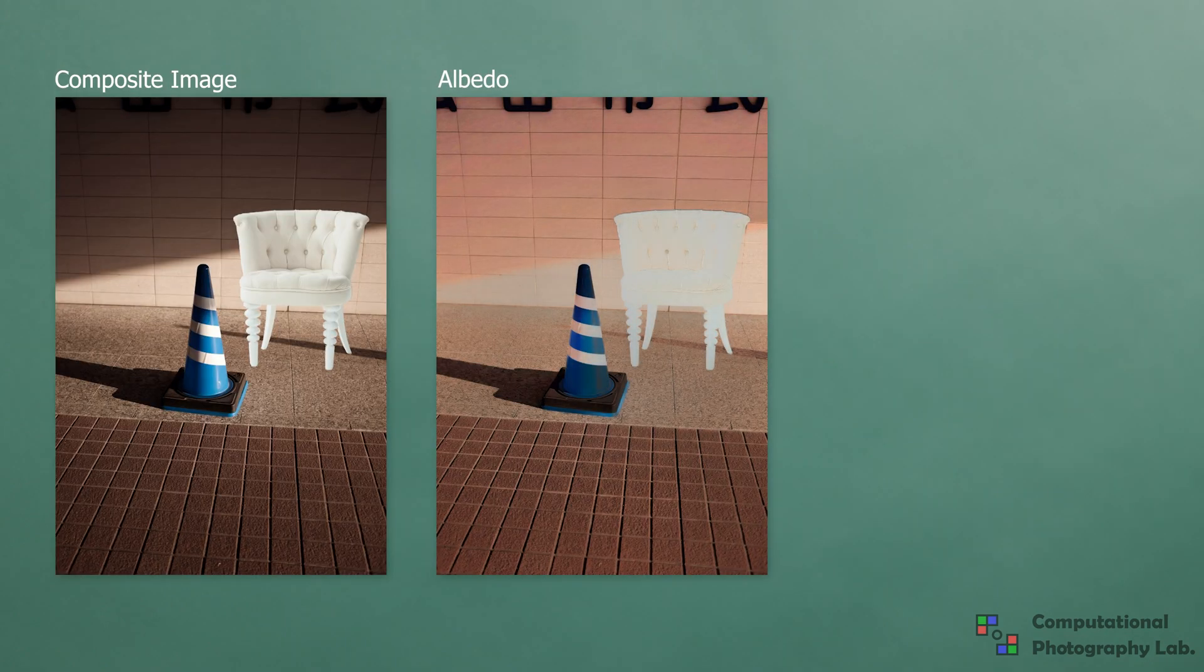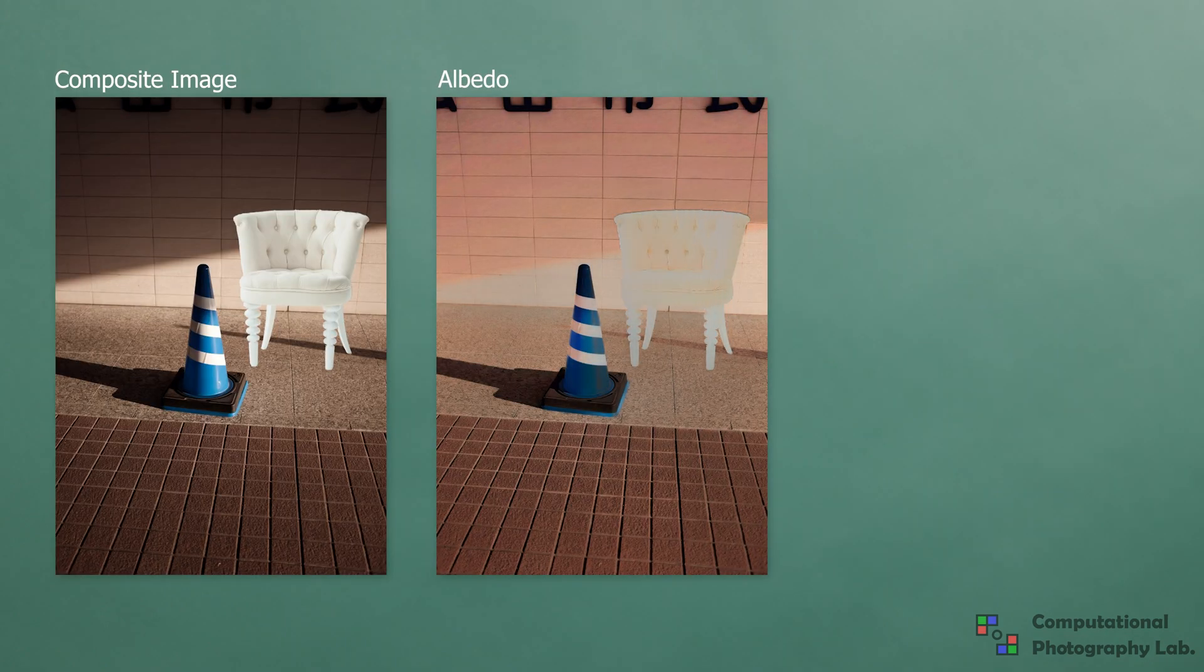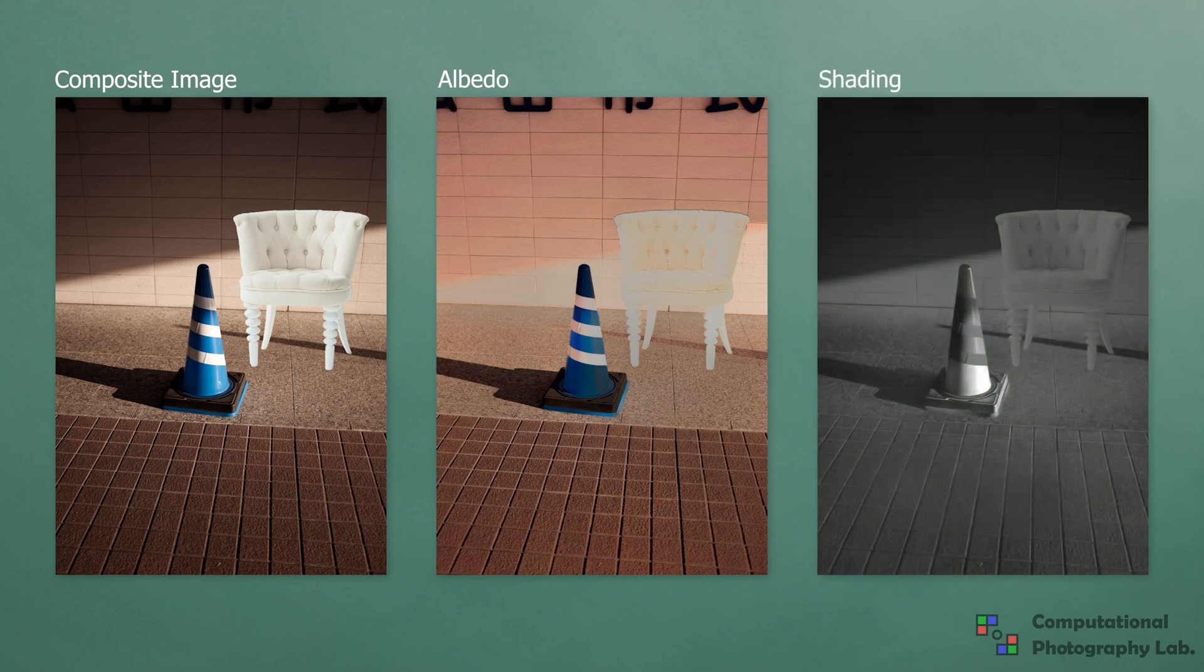Image harmonization requires accounting for both colors and illumination. In our intrinsic setup, we match the colors of the foreground and the background in the albedo layer using existing image harmonization techniques. The larger challenge comes from matching the illumination.